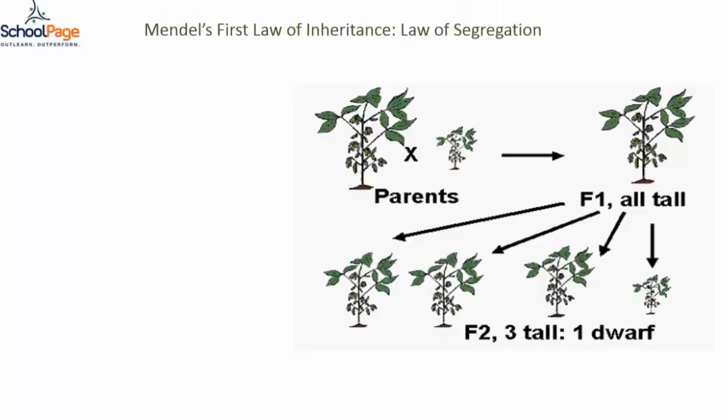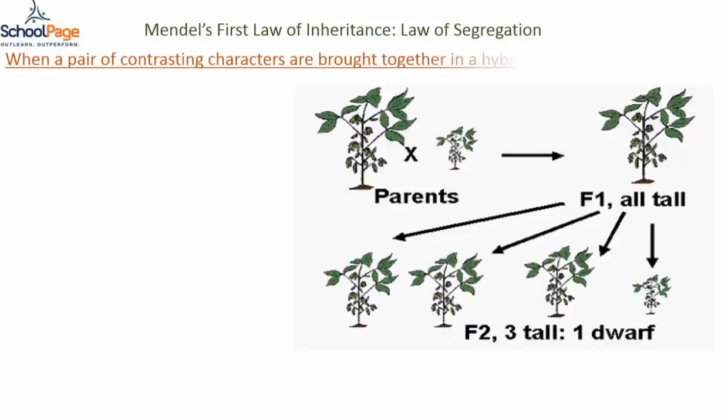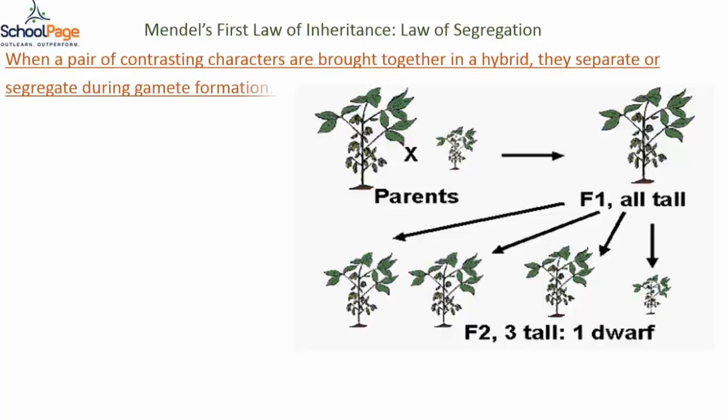Based on all these results, Mendel formulated his first law of inheritance, also called the law of segregation, because characters segregate or separate during gamete formation. The law states that when a pair of contrasting characters are brought together in a hybrid, they separate or segregate during gamete formation.